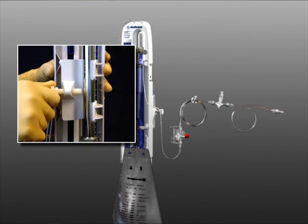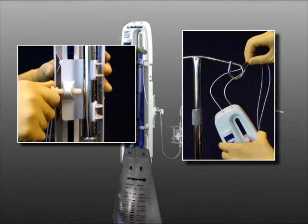The DUET can either be attached to an IV pole utilizing the built-in pole clamp or hung by the cord and cord lock located at the top of the system.